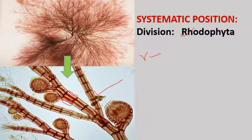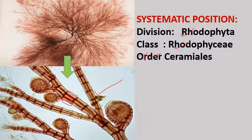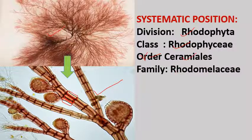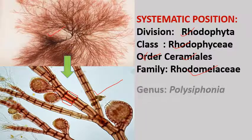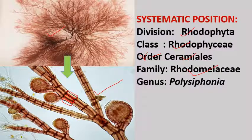The reserved food material is Floridian starch. These are important criteria for classification of red algae. Polysiphonia belongs to class Rhodophyceae, order Ceramiales, family Rhodomelaceae, and genus Polysiphonia.